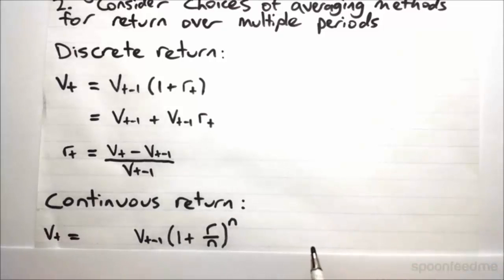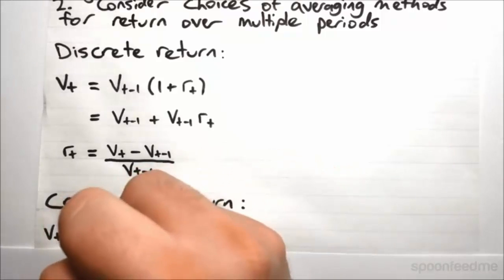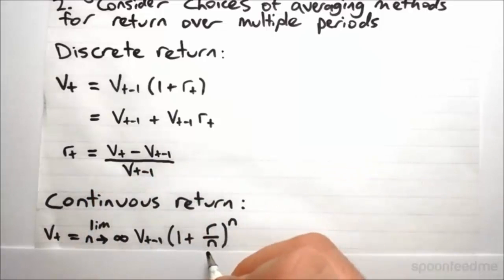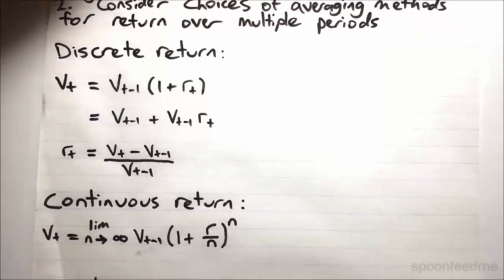The last step we have to take in order to make this continuous, because so far it's still discrete, we've just broken it down into multiple time periods instead of 1. To make it continuous, we have to take the limit of this as n goes to infinity. So we're breaking it down theoretically into an infinite number of parts. So interest is being added every single instant.